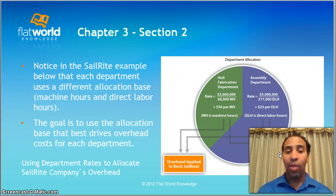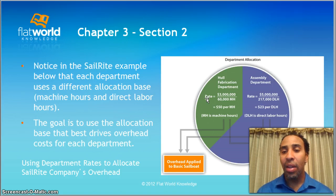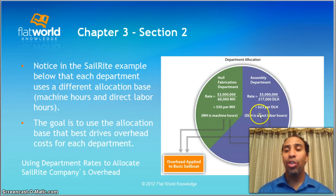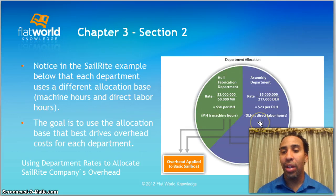In the Sailrite example, each department uses a different allocation base — machine hours and direct labor hours. Looking at the fabrication department, estimated overhead is $3 million divided by 60,000 machine hours, giving $50 per machine hour. For the assembly department — assembly involves people assembling things — estimated overhead is $5 million divided by 217,000 direct labor hours, giving $23 per direct labor hour. So not only is the cost different, but the allocation base is different between departments. MH stands for machine hours and DLH stands for direct labor hours.